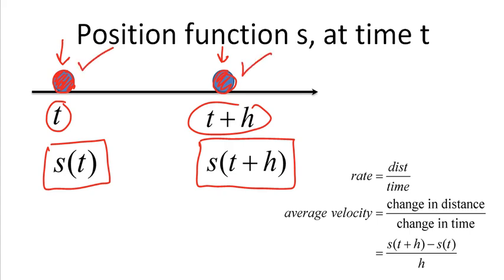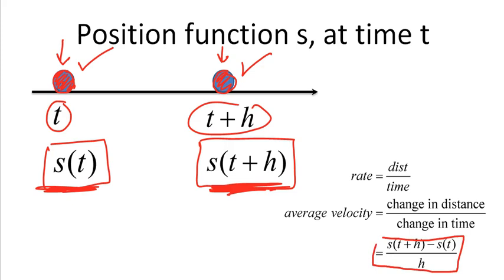So the question is: this object moved from here to here — what was the object's velocity, the rate of change? Well, velocity is distance traveled over time. All we have to do is figure out the change in distance on top, which is simply s of t plus h minus s of t, because the position function gives you the distance at that time. And in the denominator, you have the change in time: t plus h minus t. The t's cancel, so you get h. This is how you find average velocity from one point to another.